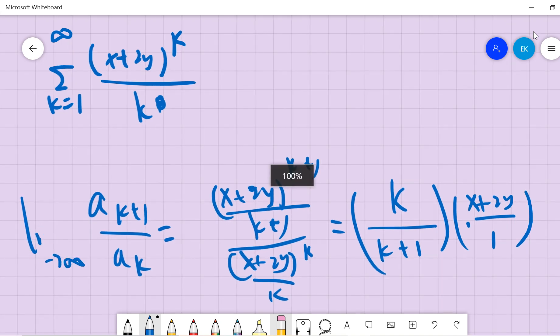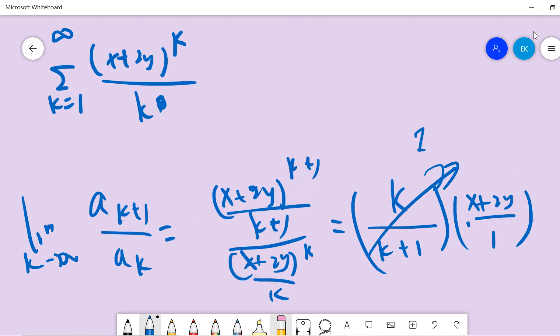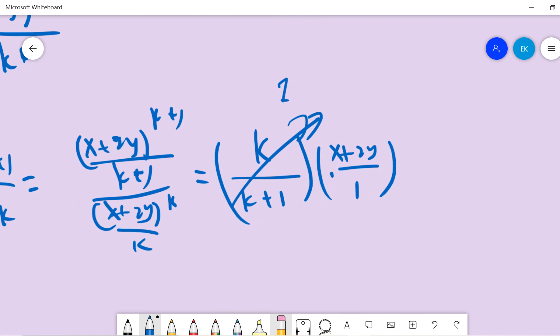Okay, so in order to converge, x+2y must be smaller than one.